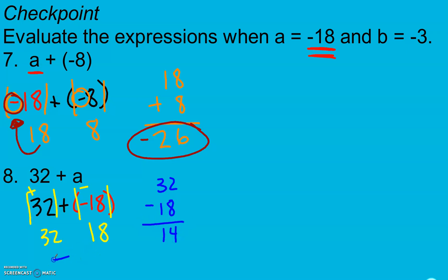So bigger minus smaller. And then we look, 32 is our bigger absolute value. It went on top, and the sign on 32 is positive, so we have a positive 14.